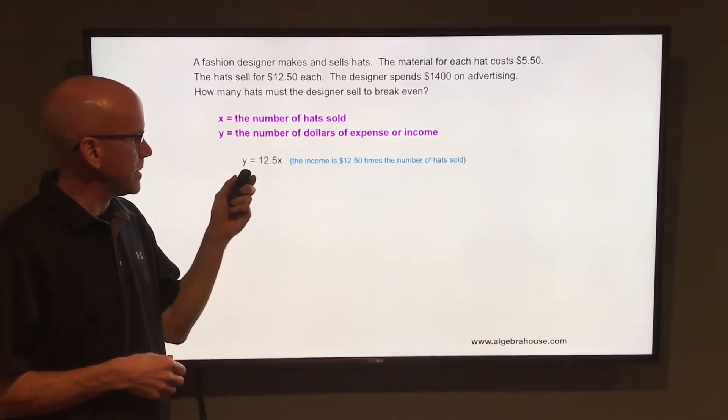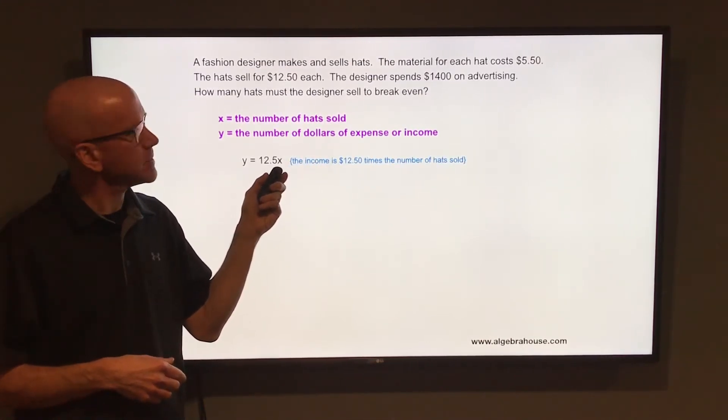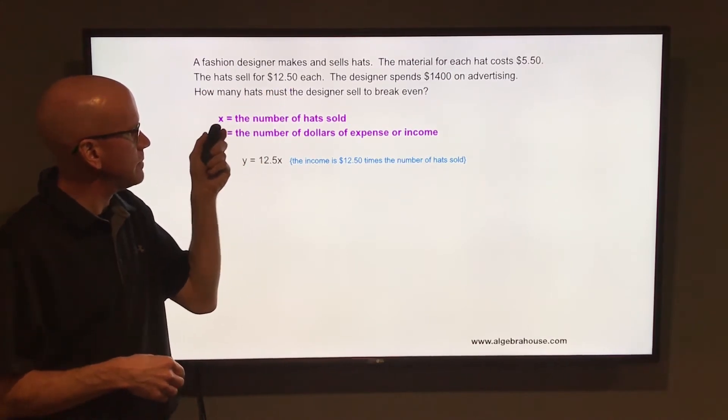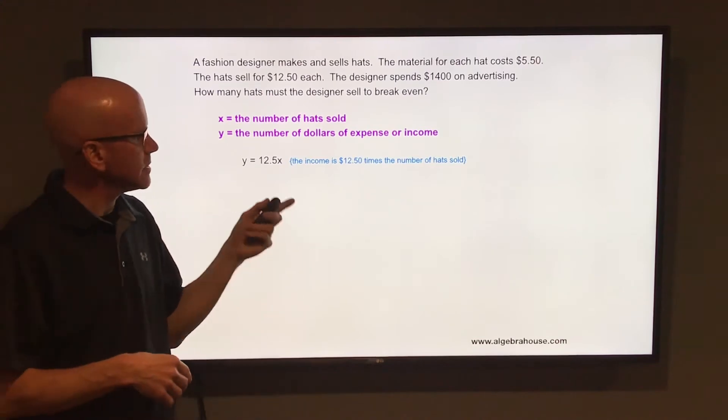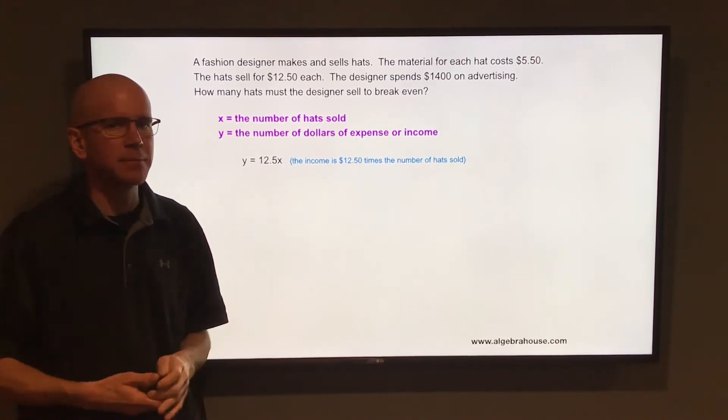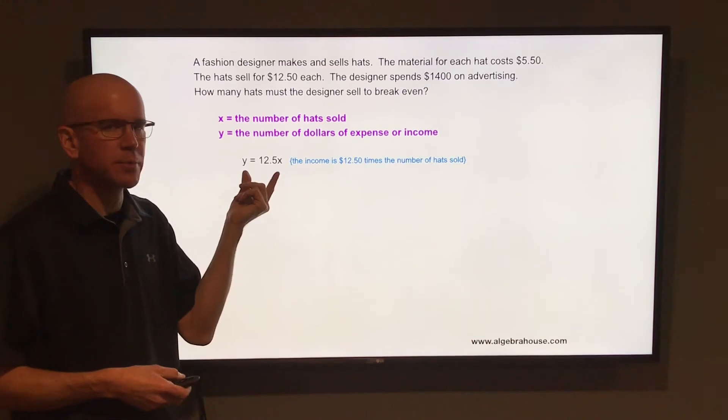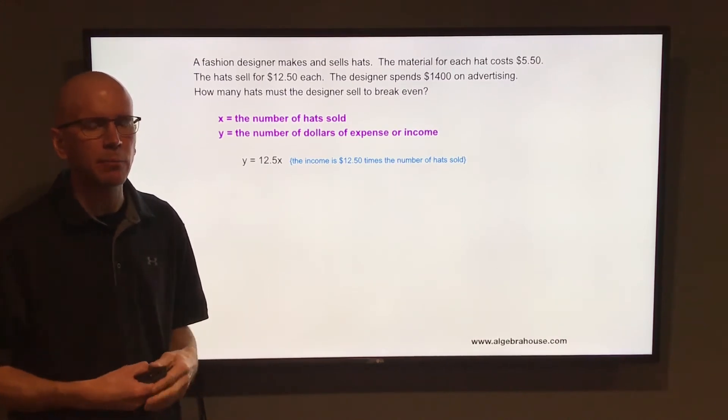So one equation is going to be Y equals 12.5X. It says the hats sell for $12.50 each. X is the number of hats sold. So the amount of money brought in is $12.50 times X, times the number of hats. That equation represents the income, the money being brought in.